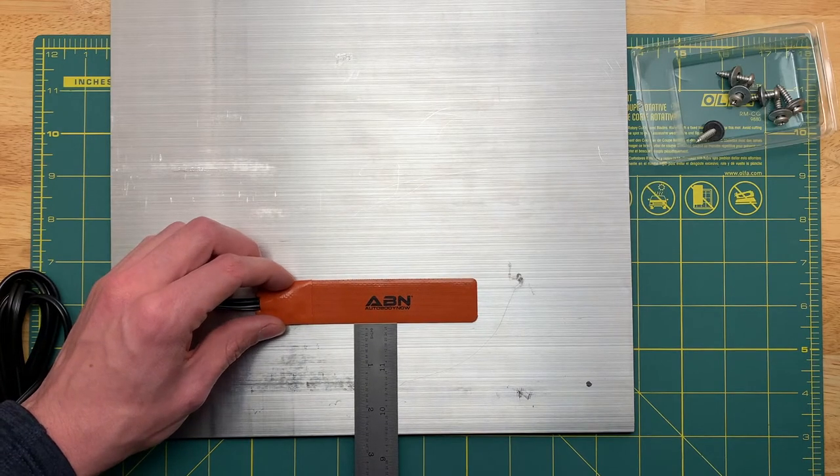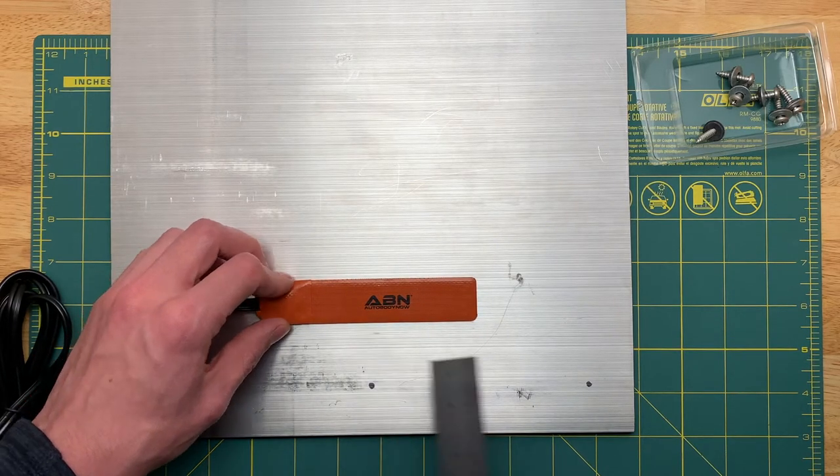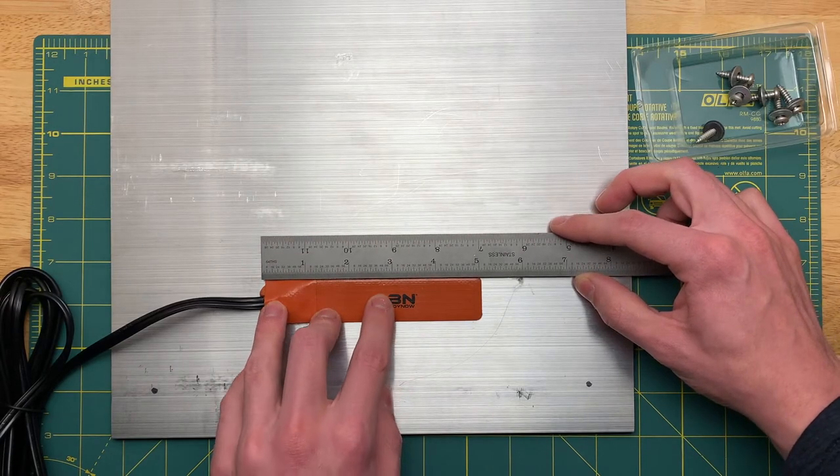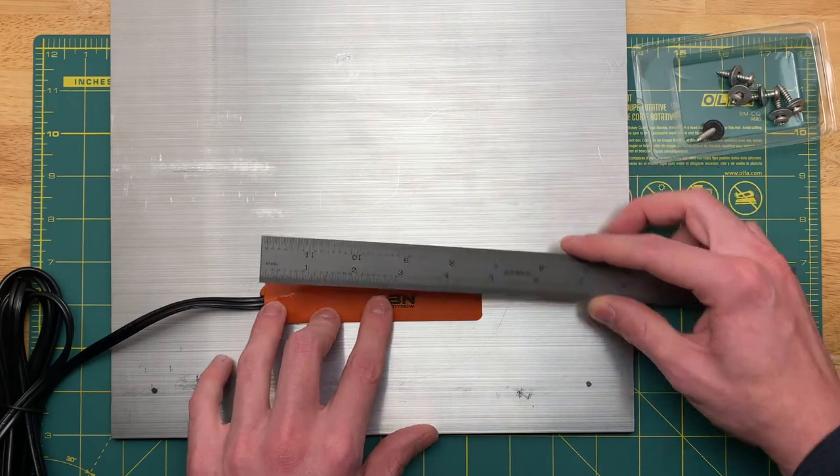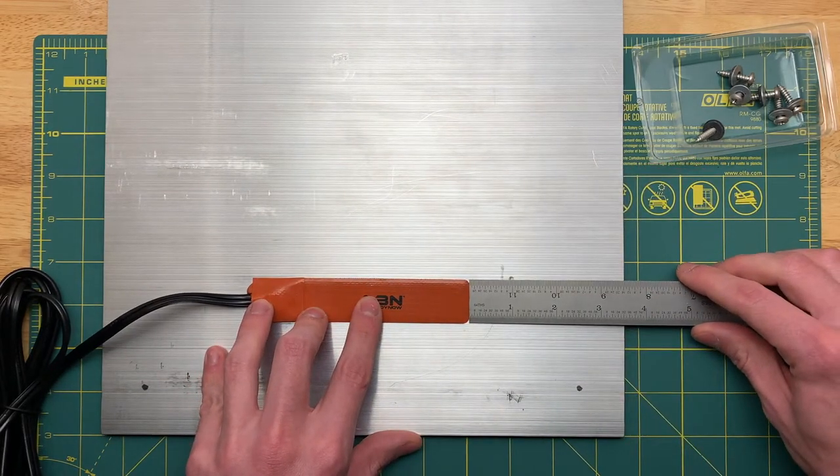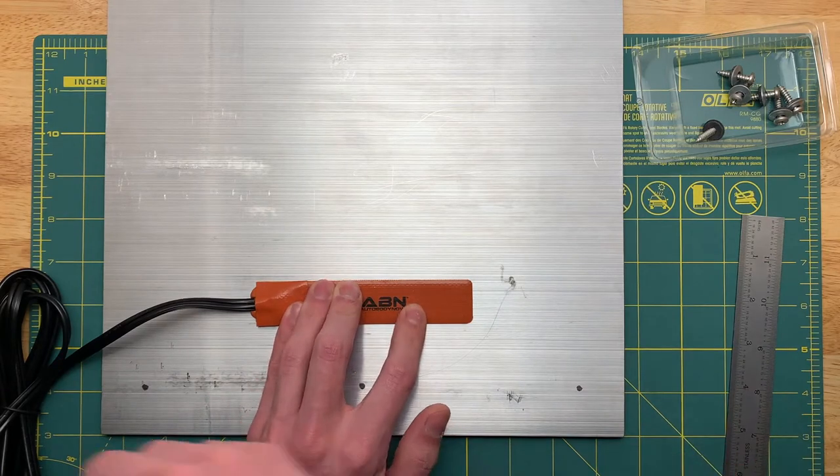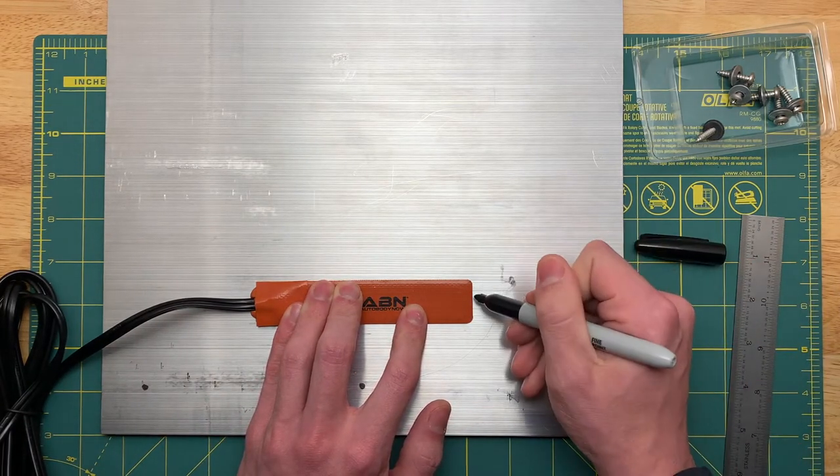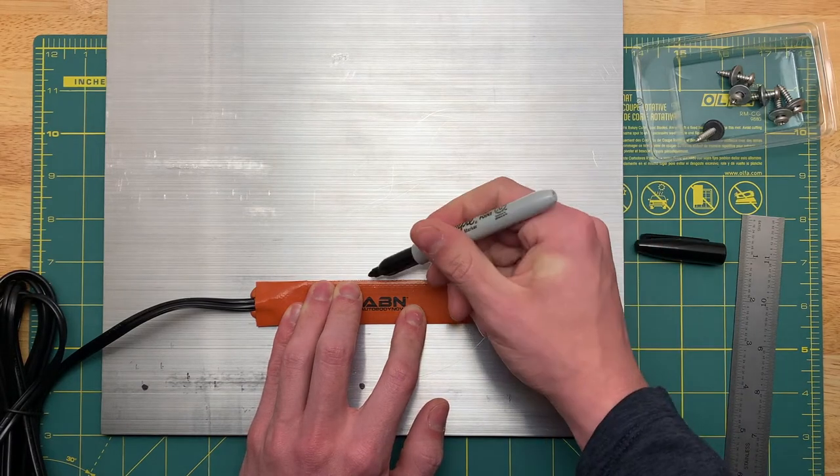So I think something like that, maybe two and a half inches in, and this thing is what, five inches long? So 12 minus five would be seven, so three and a half inches in from either side. Yeah, something like that.